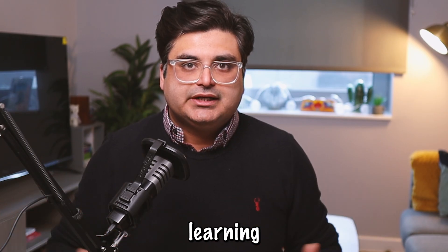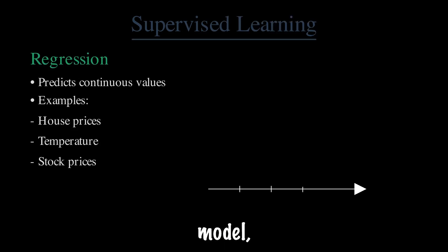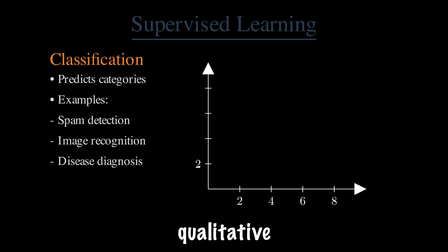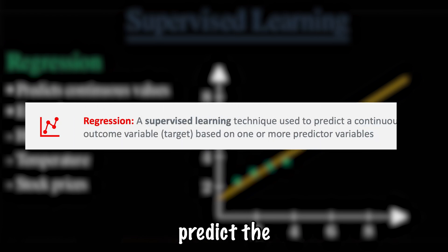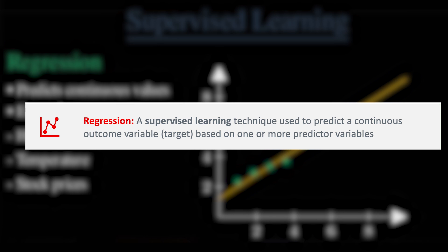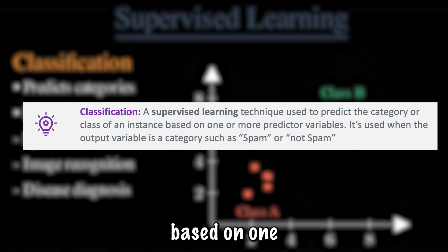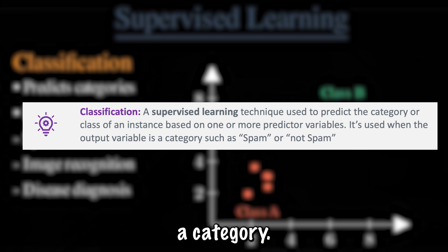How does a supervised machine learning model work? We can categorize it broadly into two types: a regression model, which predicts a quantitative output, and a classification model, which predicts a qualitative output or categories. Regression predicts a continuous outcome variable based on one or more predictor variables. Classification predicts the category or class of an instance, and is used when the output variable is a category.